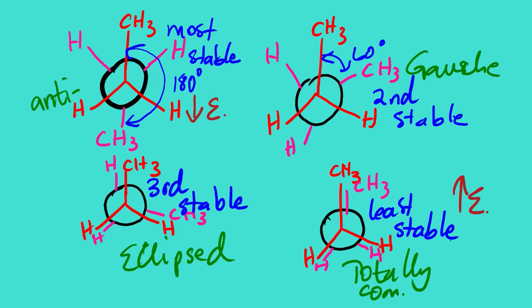This lesson video was meant to cover the stability of different types of conformation. Now you know that anti-conformation is the most stable and totally eclipsed is the least stable. That's it for this lesson. This is Faula SJ, thank you very much.